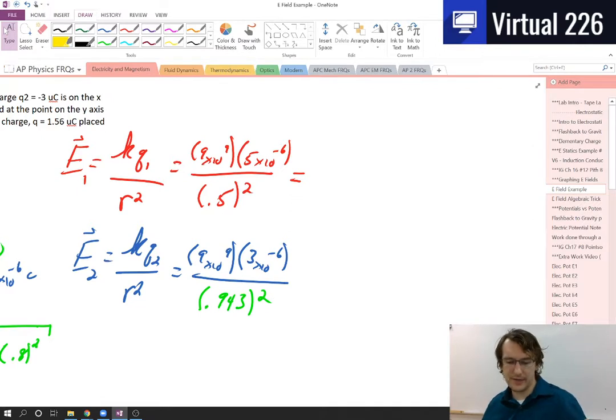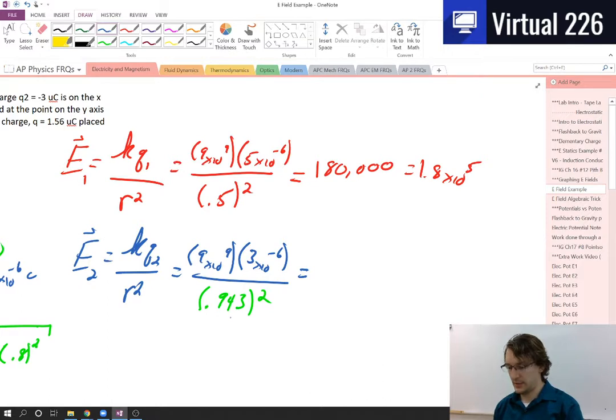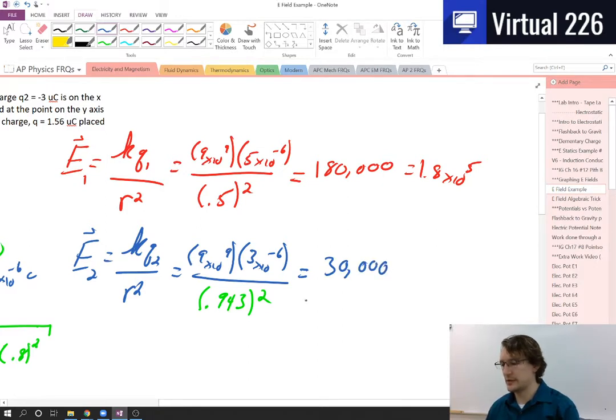And that makes sense because it's got to be bigger than 0.8 because it's the hypotenuse. It's got to be the longest side of a triangle. Okay? So be careful about that. When we do this, these are both numbers. I guess I'll figure out what the numbers are. 9 times 10 to the 9th times 5 times 10 to the minus 6th divided by, be careful, 0.5 to the square. I get 180,000 for E1. So 180,000, which is also 1.8 times 10 to the 5th. And for the blue one, 9 times 10 to the 9th times 3 times 10 to the minus 6th divided by 0.943 to the square. Don't forget that squared. I get about 30,000 here. Let's just call it 30,000. So 3.0 times 10 to the 4th. Okay? So that red electric field is much larger than the blue electric field, which is nice for us.